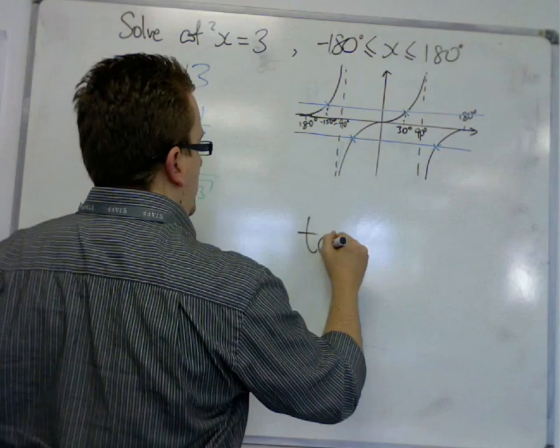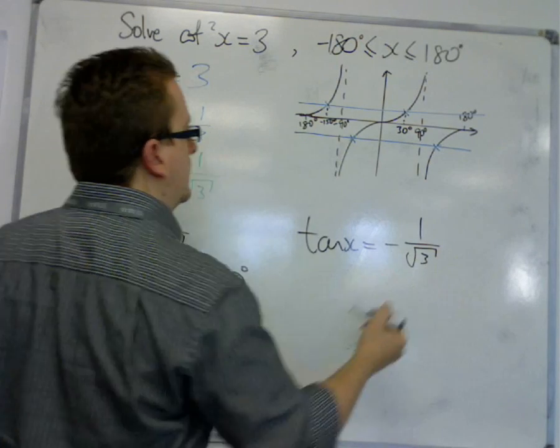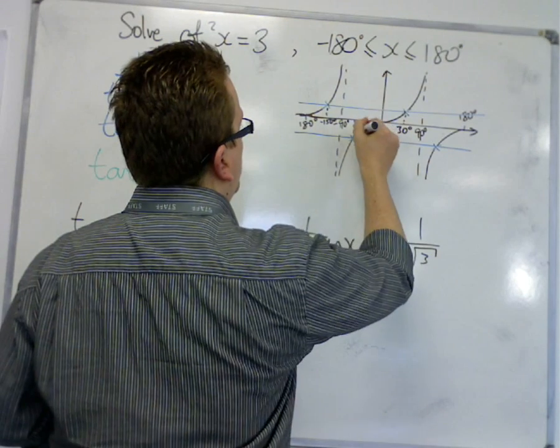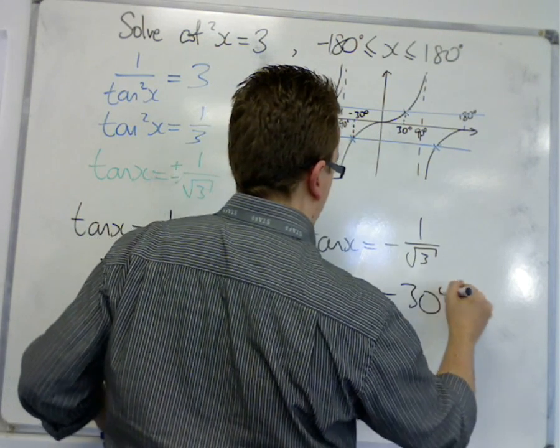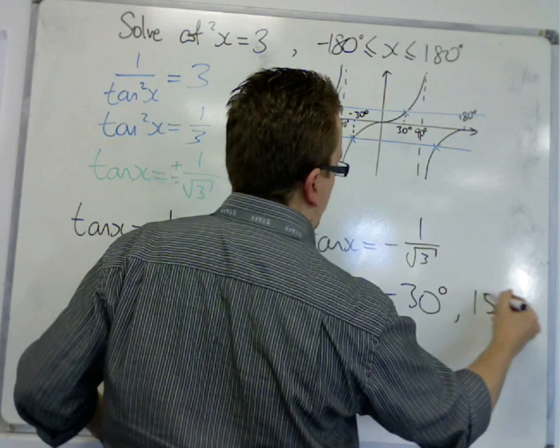Now if you're solving tan x is equal to minus 1 over root 3, then you're looking at minus 30 degrees from here. And you're looking at 180 degrees from here, and that would be 150 degrees.